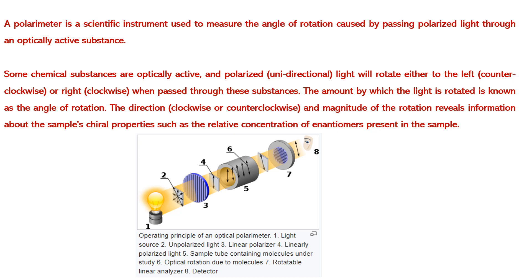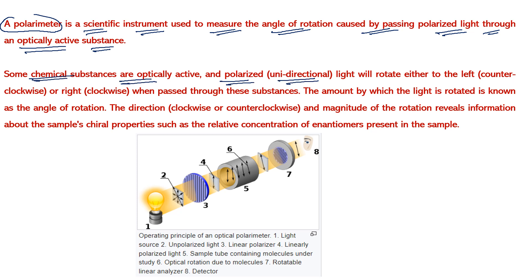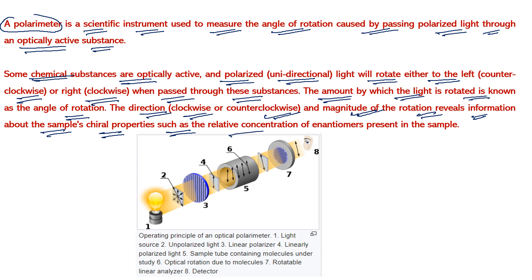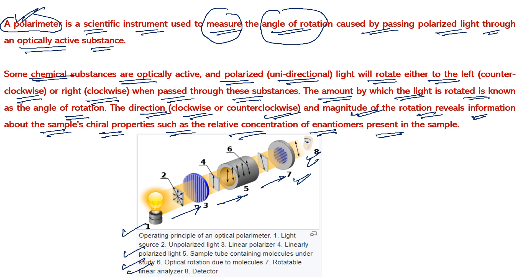Before moving on, let's understand what a polarimeter is. A polarimeter is a scientific instrument used to measure the angle of rotation caused by passing polarized light through an optically active substance. Some chemical substances are optically active and polarized unidirectional light will rotate either clockwise or counter-clockwise when passed through these substances. The amount by which light is rotated is the angle of rotation, and the direction and magnitude reveal information about the sample's chiral properties, such as the relative concentration of enantiomers present.